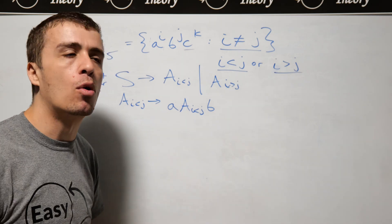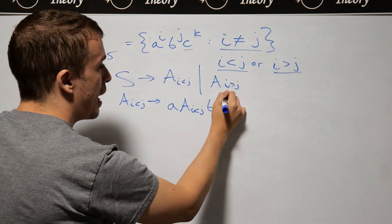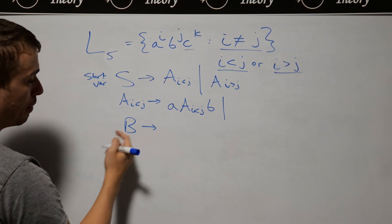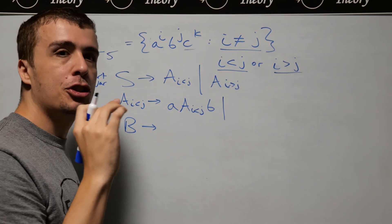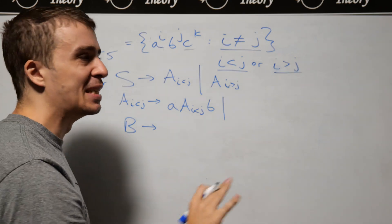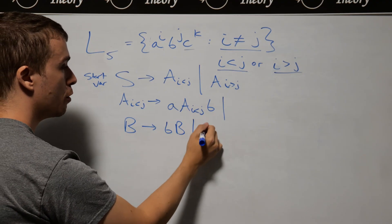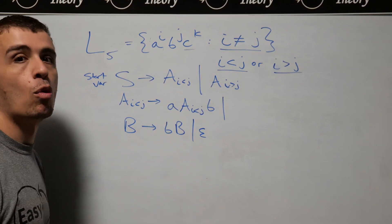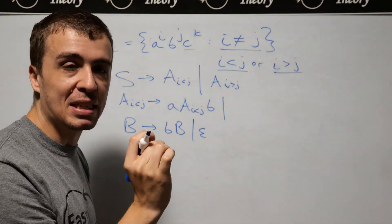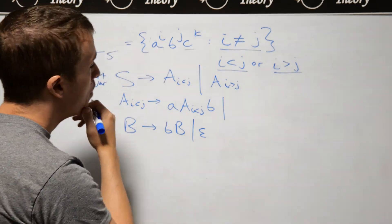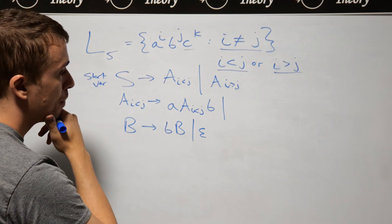But we need to make at least one more B. I'll have a variable here called B, whose sole purpose is to make more B's. This variable B will generate as many B's as it wants, at least zero. It's important that it's at least zero. You can work it so B makes at least one more, but I'm going to do it this way.